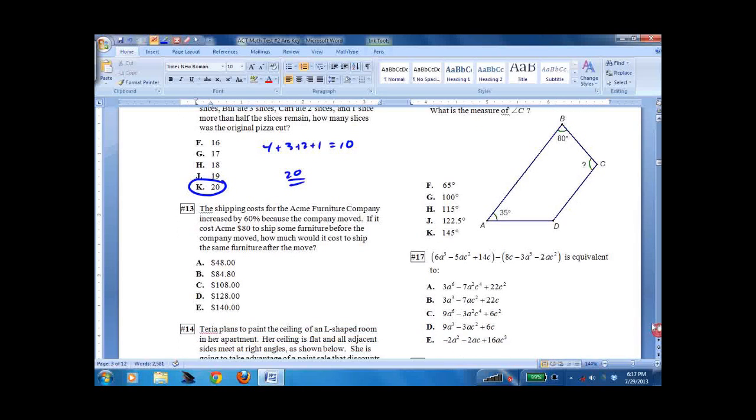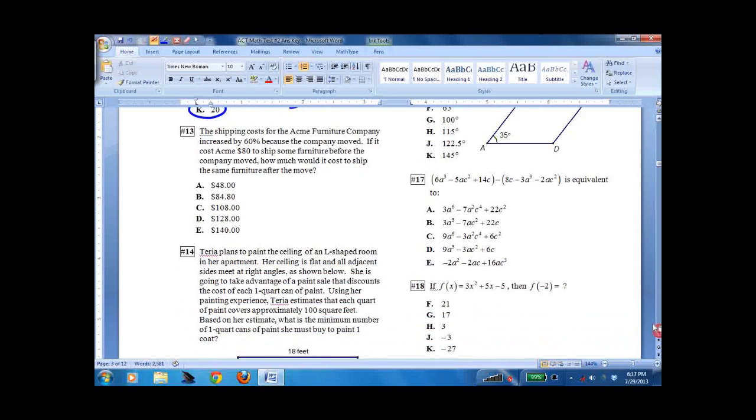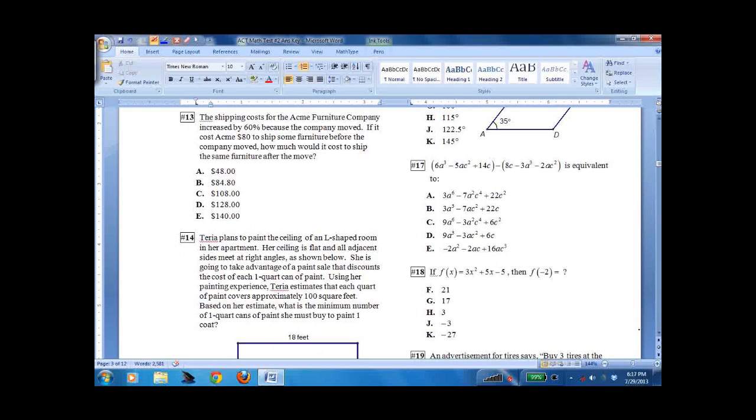Number 13, another percentage problem. Shipping costs for the Acme Furniture Company increased by 60%. It cost them 80 before and increased by 60%. So it's going to be 80 plus 0.6 times 80 because it's gone up by 60%. And that's $48. That's $48. So the total is $128.